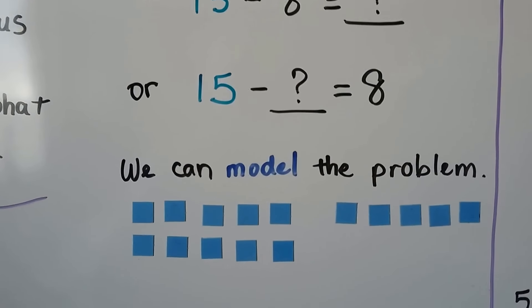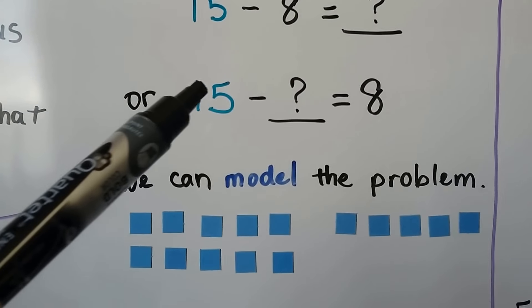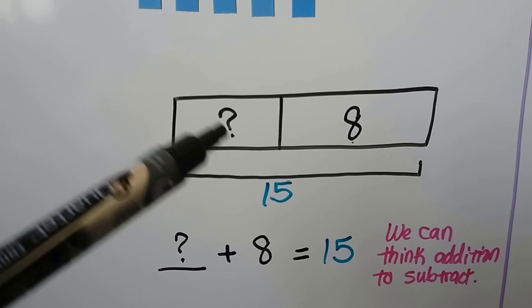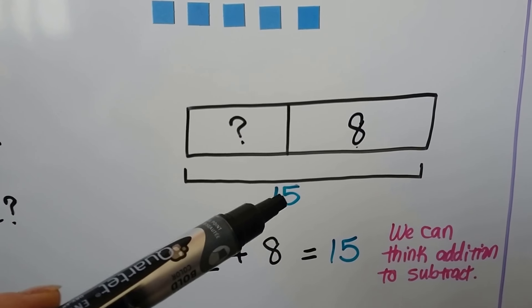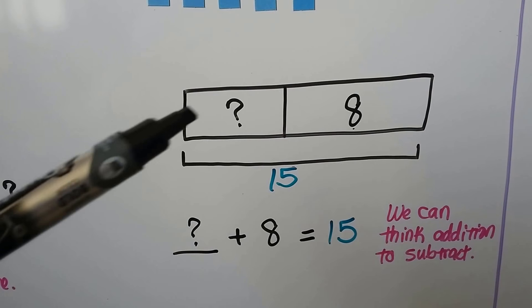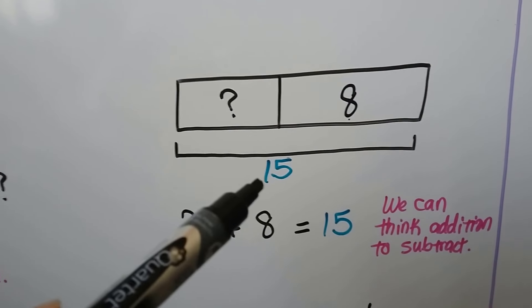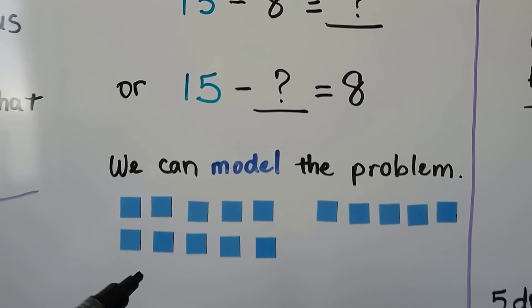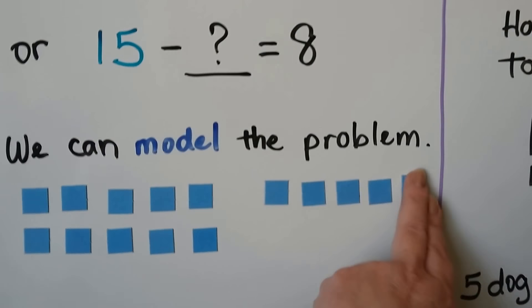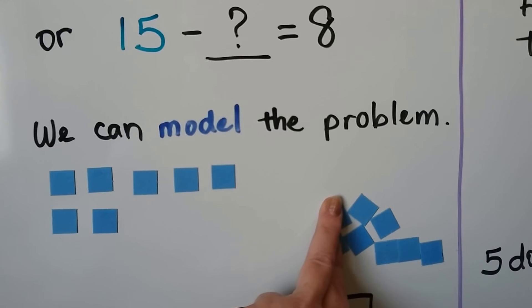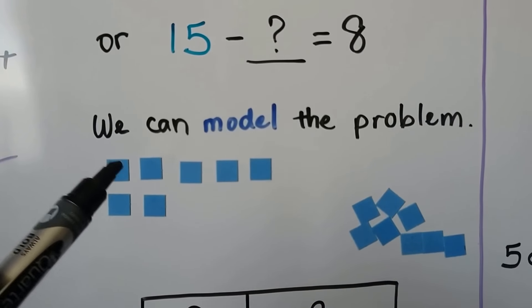We can model the problem with counters. We can get 10 counters and 5 more to make 15. We can make a bar model and say some number and the 8 that are left over at the party make the 15 that were originally at the party. We can think addition to subtract: some number plus the 8 is going to equal the 15 children. Using counters, we know there are 8 children left, so we take away the 8. That leaves 7 — so 7 children went home.